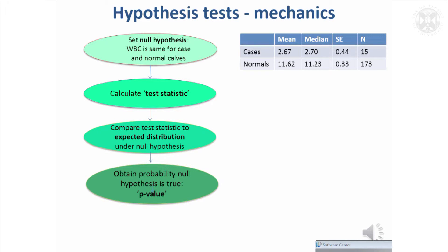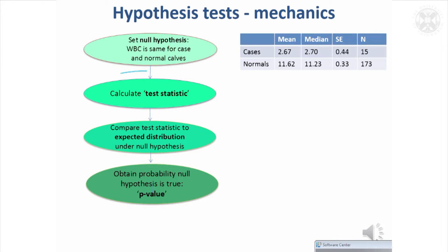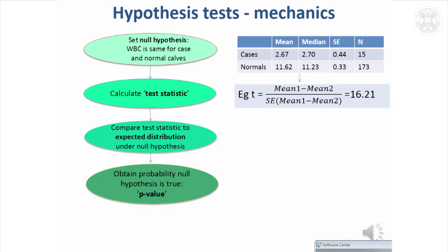It's helpful to think about what a hypothesis test is in stages. The way you set out is by stating what's known as a null hypothesis. In our case, that would be: white blood cell count is exactly the same for the cases and the controls, and the different mean values we observed were just a chance result. In our statistical test, we determine whether that null hypothesis can be disproved, and the next step is to calculate a test statistic from the difference in the means, taking into account how variable those means are.